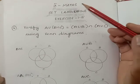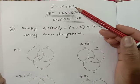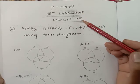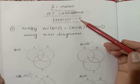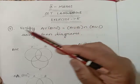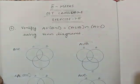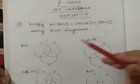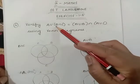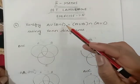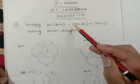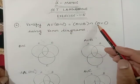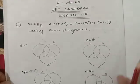Today we are going to learn 9th standard set language, exercise 1.5, 4th sum. Verify A union B intersection C equal to A union B intersection A union C.